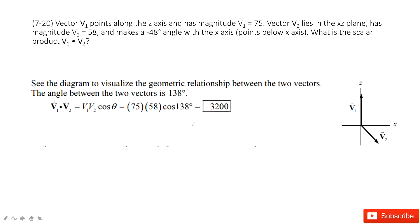In this chapter, we talk about work and energy. As you can see, we have the x-z plane, and vector v1 pointing to the z component with magnitude 75.